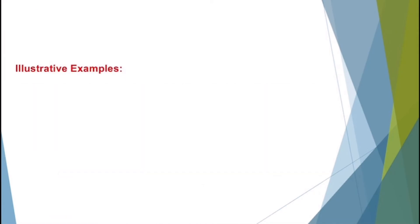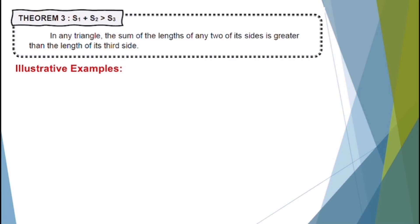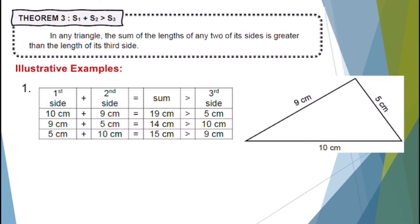Let's proceed to Theorem 3: In any triangle, the sum of the lengths of any two of its sides is greater than the length of its third side. For example, refer to the triangle on the slide with labeled side measurements. If we add two sides, their sum must be greater than the third side. For example, 10 plus 9 is 19, and 19 is greater than the third side, which is 5 centimeters.